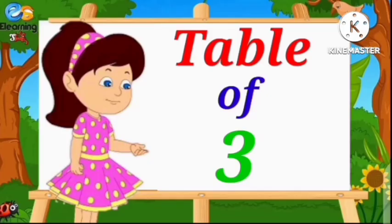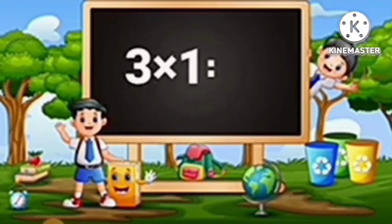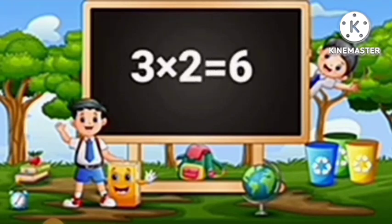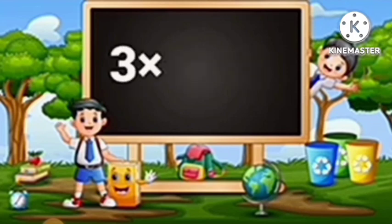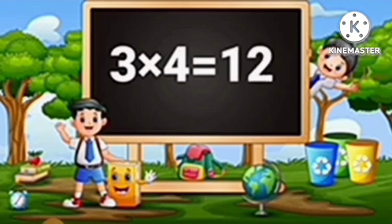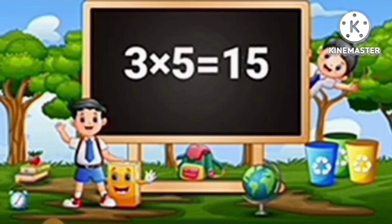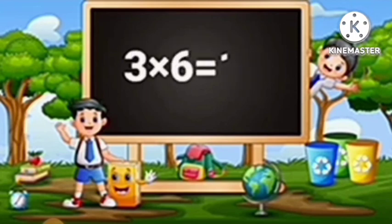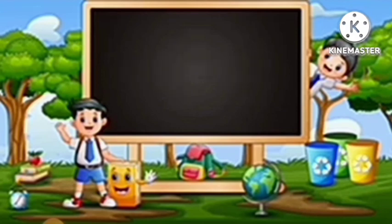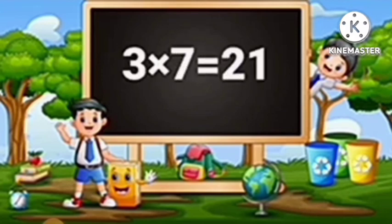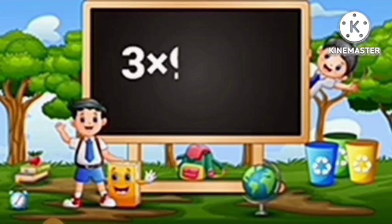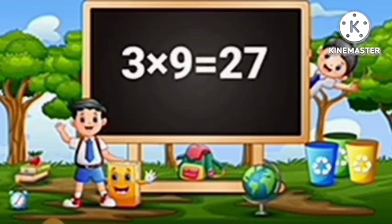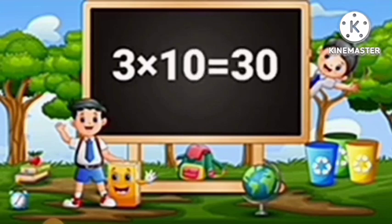Table of Three. Three ones are three. Three twos are six. Three threes are nine. Three fours are twelve. Three fives are fifteen. Three sixes are eighteen. Three sevens are twenty-one. Three eights are twenty-four. Three nines are twenty-seven. Three tens are thirty.